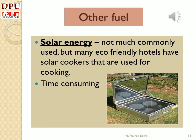Natural resources: Under natural resources, first is solar energy, which is obtained from the rays of the sun and used to produce energy. Solar energy as a fuel is not so commonly used in hotels, but many eco-friendly hotels have solar cookers used for cooking, though it is a little time-consuming as it takes a lot of time to cook the food. Advantages: it is eco-friendly, does not pollute air, and is economical and easily available. Disadvantages: special equipment is required and it is time-consuming.